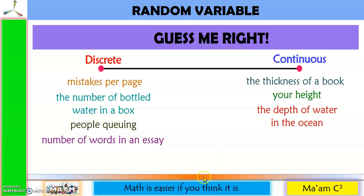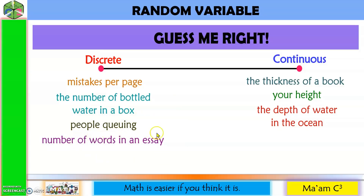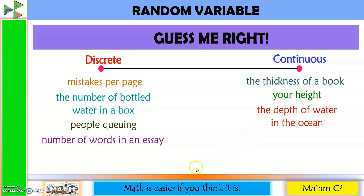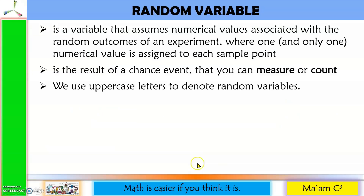Recalling our previous activity: which group is countable? It is the discrete group. You can count mistakes per page, the number of bottled water in a box, the people who fall in line, and the number of words in an essay. While continuous is the measurable group — we measure thickness, height, depth of water, among others. Also, random variable uses uppercase letters.